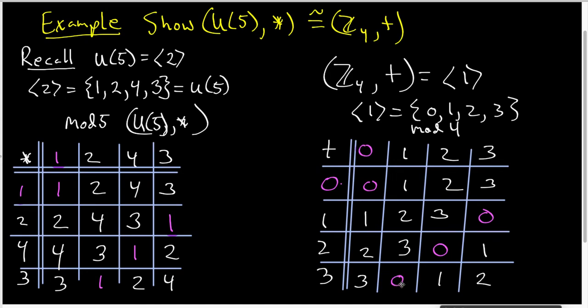This is not a surprise since 0 is the additive identity in the Z4 group. Now what I want to do is let's look at this pretty green color. And I'm going to use that for the generator of the group. 2 is the generator of U5.